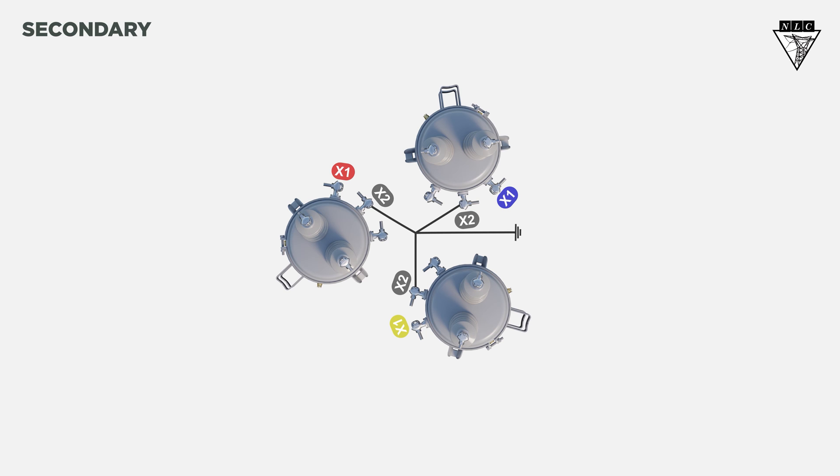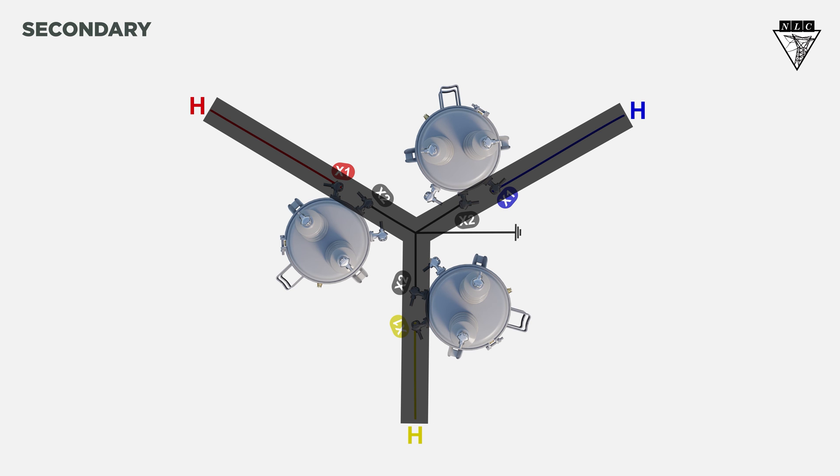To get power to the customer, run the hot legs from each X1 bushing. This forms another Y shape on the secondary side, just like the primary.